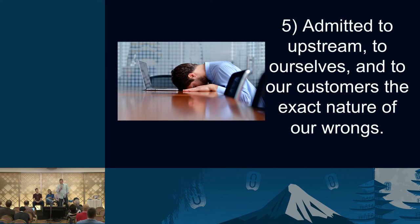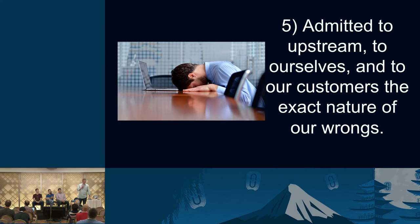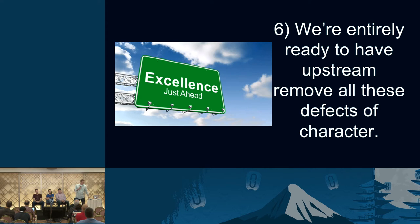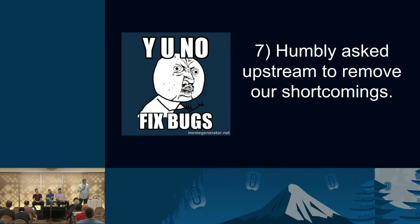The next step in our 12-step program: we admit to upstream, ourselves, and our customers the exact nature of our wrongs. Sometimes this is pretty obvious when things don't go well, but it's important for us to be honest that things don't go correctly. The sixth step is we're entirely ready to have upstream remove all these defects of character — part of why we're here this week, to get involved, to help shape the future of OpenStack. The seventh step is we humbly ask upstream to remove our shortcomings.